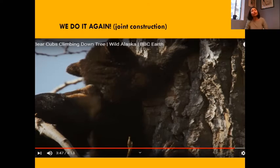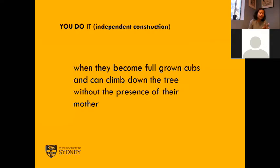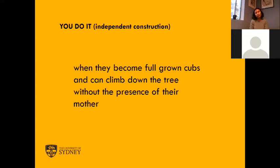They are doing it together. It's like the birds — the baby birds are in the nest, the mommy flies, comes back with a worm, and feeds the baby. That is modeling: the babies see the moms fly. When they grow up, the mom is going to fly with them. Independent construction is not shown here — it will only happen when they become full-grown cubs and can climb down the tree without the presence of their mother. That's around 16 to 18 weeks when they don't breastfeed with their moms anymore. That is independent construction. In the wild, it naturally happens, and in human beings as well.